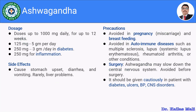Moving towards the dosage of Ashwagandha. Normally we use 1000 mg daily for up to 12 weeks. Apart from this, 125 mg to 5 g per day can be used. For diabetes, 250 mg to 3 g per day is used. For inflammation, 250 mg of Ashwagandha root or rhizome powder is used.